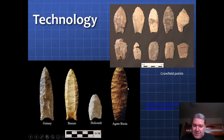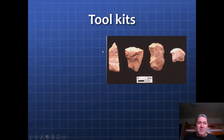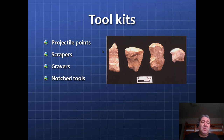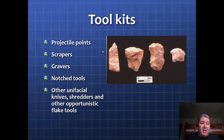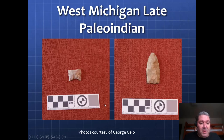Here are some of those technologies: a Gainey point, a Barnes point, a Holcomb point, an agate basin point, and then Crowfield points — all fairly old point technologies. They developed not just arrowheads but whole toolkits with projectile points, scrapers for scraping meat off bone, gravers, notched tools for sewing, other unifacial knives, shredders, and expedient flake tools — meaning you break a flake off and, even if it wasn't intended, you can use it for something else.